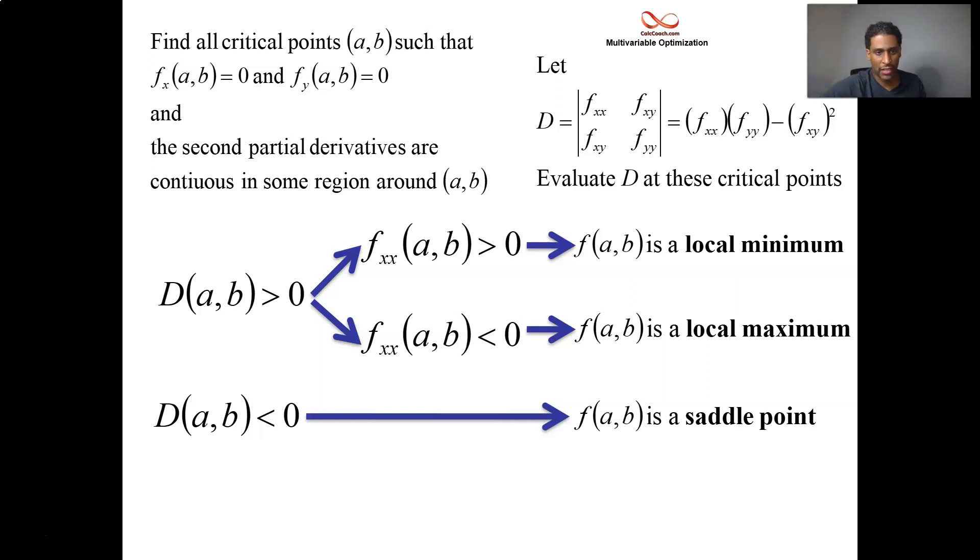So D is positive: local max or local min based on double X. D is negative: automatic saddle. What's left over? If D is equal to zero, then actually you just don't have any information. The test doesn't tell you anything. And we have to search for some other kind of way to figure out what kind of critical point you have. It generally doesn't come up, but just so you know that's what happens.